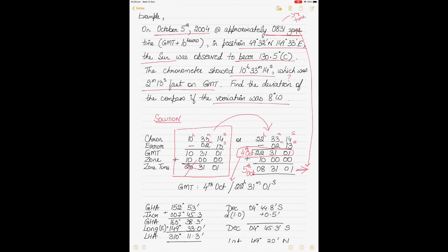To summarize: 10:33:14 on the chronometer could mean 10:33:14 in the morning or 22:33:14 at night, since a chronometer doesn't give 24-hour notation. You subtract the error in both cases to get two possible GMT times, then apply the zone correction — GMT plus 10 hours since we're in east longitude. You get two zone times and compare them to the hint given in the question, which was 5th October approximately 08:31 on the ship. The first case didn't match; the second case did, giving us GMT of 4th October 22:31.